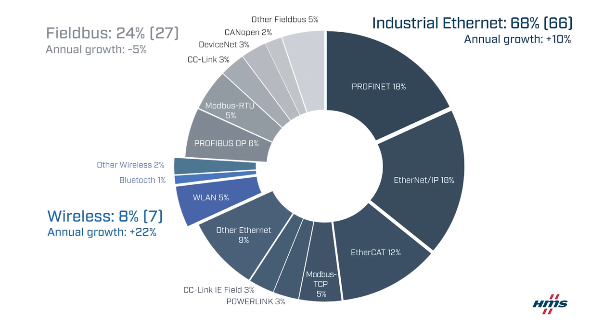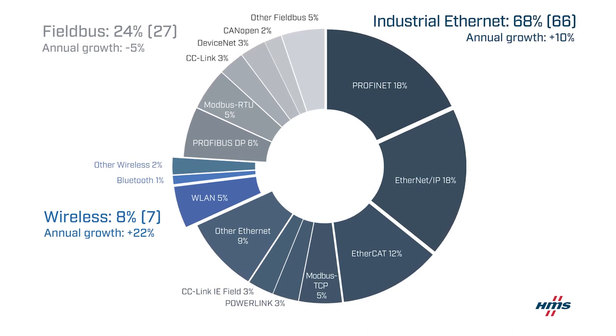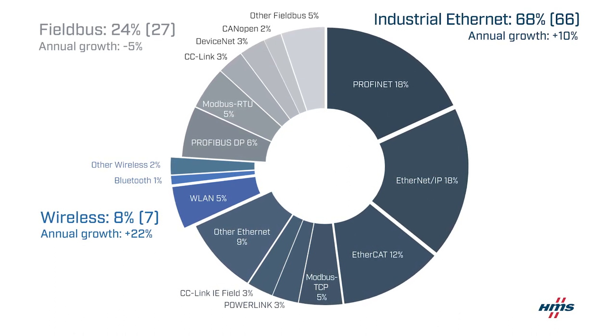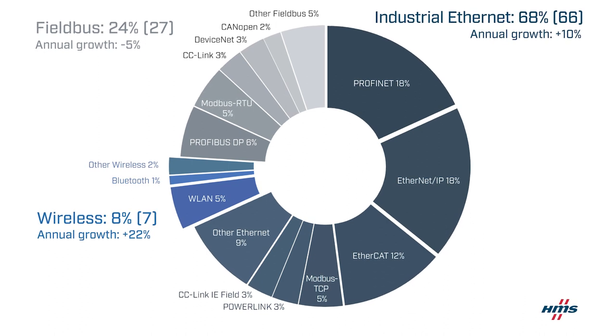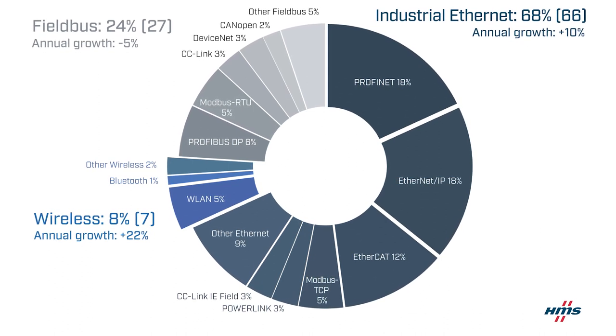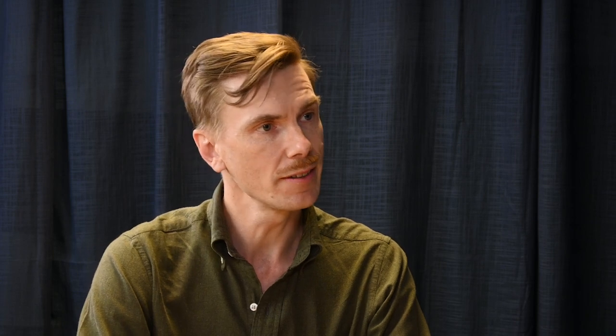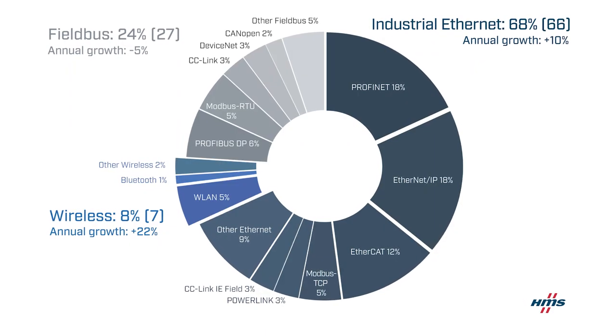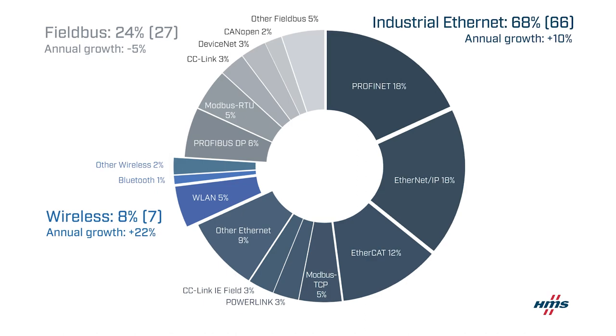We see significant growth for the industrial Ethernet-based communication. Field buses are declining a bit, but they still play an important role due to their robustness for special applications. But if we zoom into the top three, we have in first place Profinet and EthernetIP, followed by EtherCAT that has grown significantly over the last years.